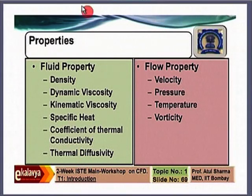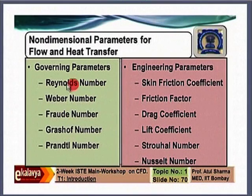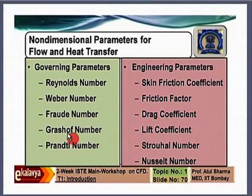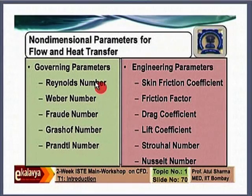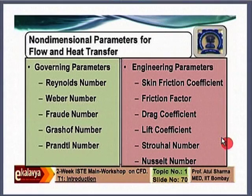There are two types of parameters: input parameters and output parameters. Non-dimensional input parameters (governing parameters) include Reynolds number, Weber number (surface tension), Froude number (gravitational force), and Grashof number (buoyancy force). Output engineering parameters include non-dimensional wall shear stress, pressure drop, drag force, lift force, frequency of unsteady flow, rate of heat transfer, and so on. These are the non-dimensional forms engineers are interested in.